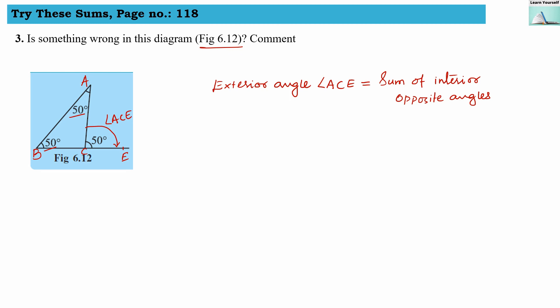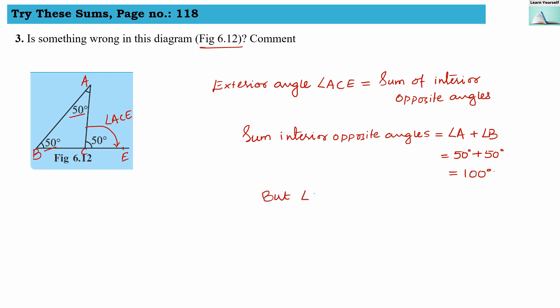Let us check using the exterior angle property: the exterior angle equals the sum of the interior opposite angles. The sum of angle A plus angle B equals 50 degrees plus 50 degrees, which equals 100 degrees. But the exterior angle ACE is given as 50 degrees, not 100 degrees. So this exterior angle property does not hold true for this diagram, meaning something is wrong.